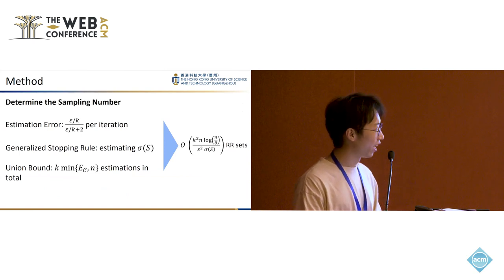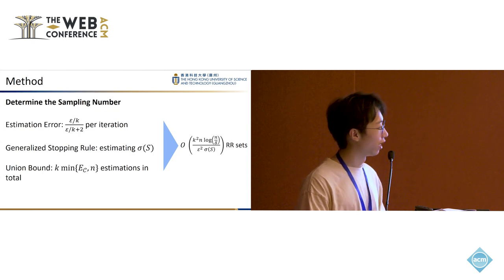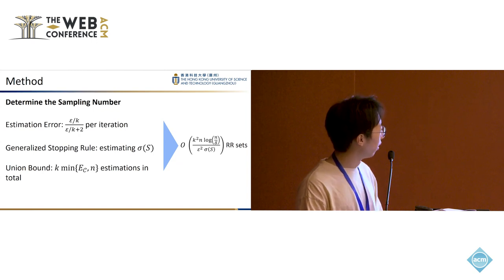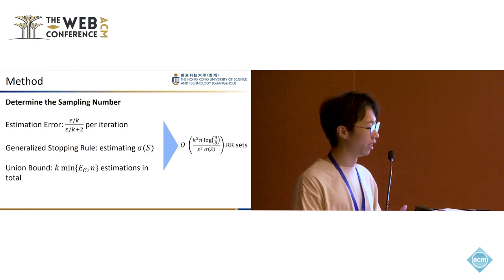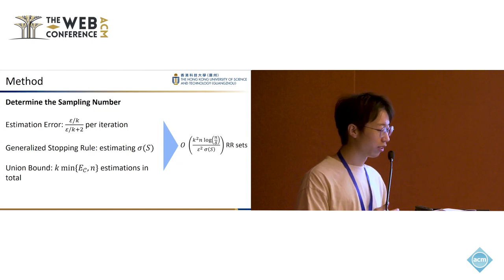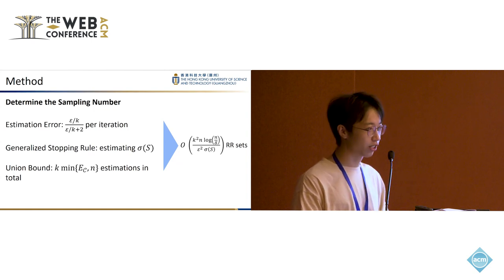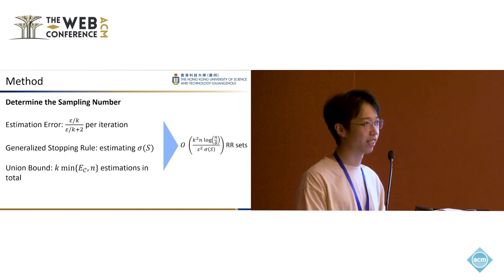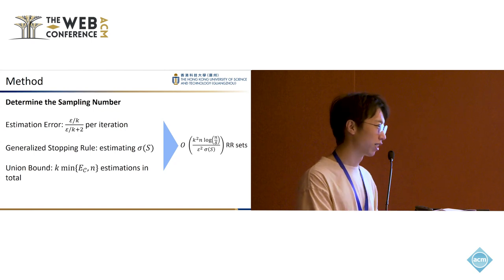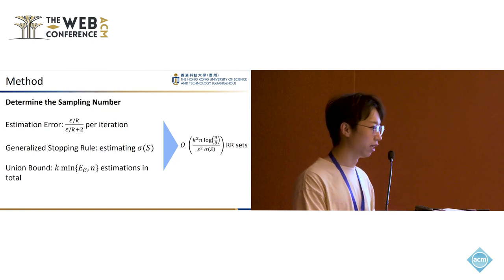We need to decide how many RR sets we need to sample to generate a theoretically guaranteed solution. First is estimation error. To guarantee the overall error term is epsilon, we need to ensure that the estimation error of each iteration is roughly epsilon over K. Because in a greedy framework, if you cannot get the exact computation of the objective function, the error will be accumulated.